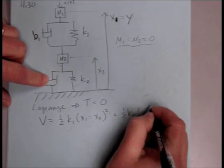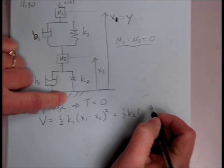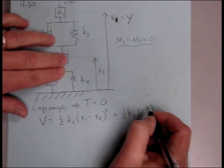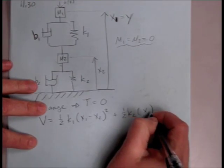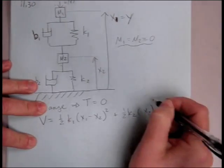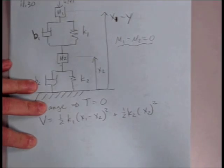Our other potential energy term is down here for our second spring. Again, one half, now k2, and its displacement is just x2. We'll assume it's x2. x1 has no bearing on this one, and we'll need that squared.